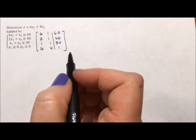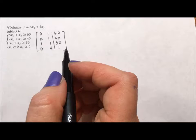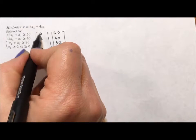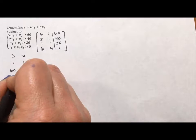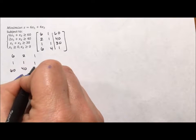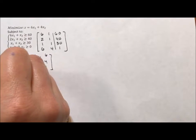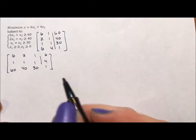Okay, what we need to do next is we need to transpose our matrix. So my first column becomes my first row, 6, 1, 60. My second row becomes my second column. My third row becomes my third column. And my fourth row becomes my fourth column. All right, now we can start setting up our simplex method.